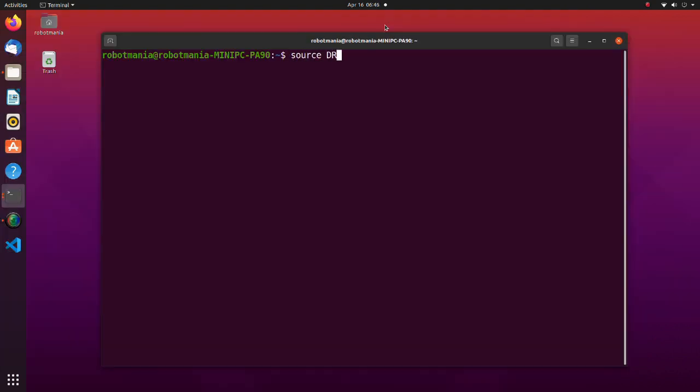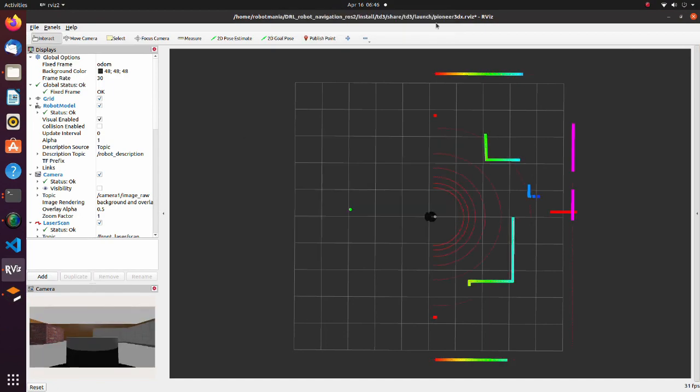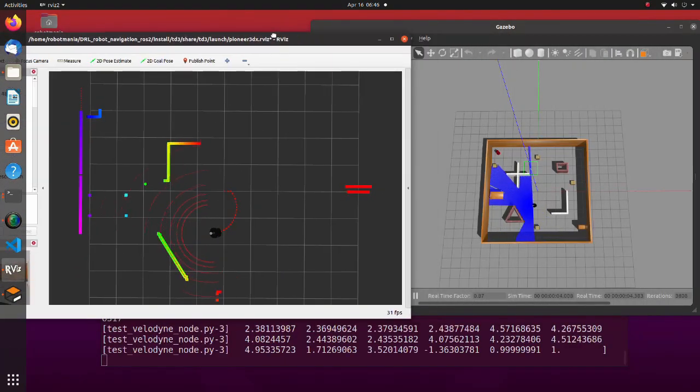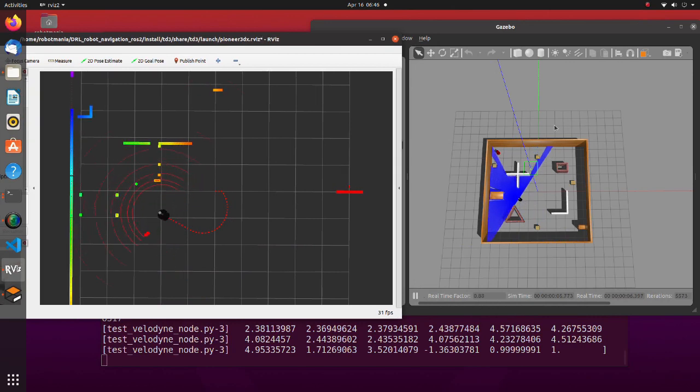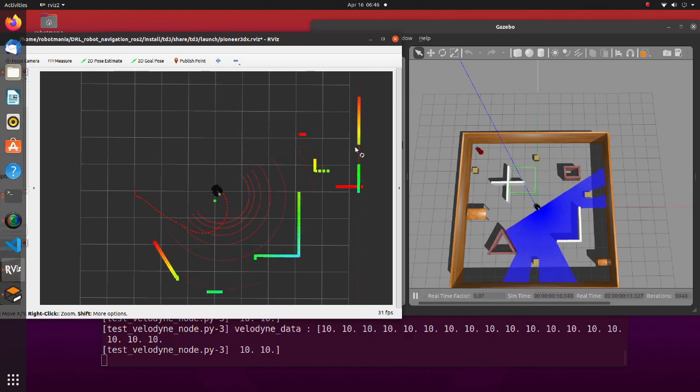To test training results, launch the test simulation launch pi script. As we can see, the robot successfully navigates to the goal.